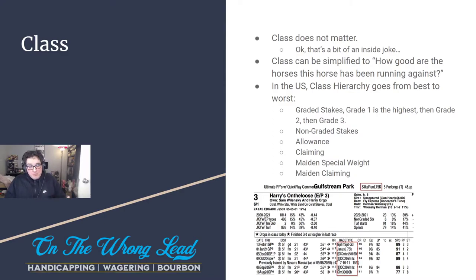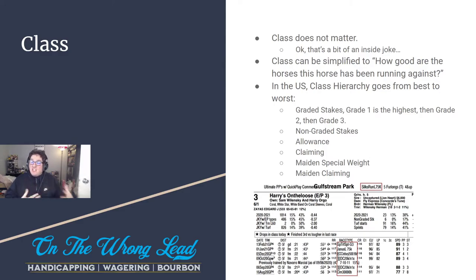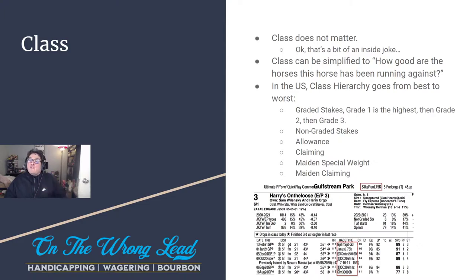Class can be simplified to: how good are the horses this horse has been running against? What kind of company has this horse been keeping? In the US there's a class hierarchy. You start with graded stakes — Grade 1s being the highest, the best races. The Kentucky Derby is a Grade 1 race, the Santa Anita Handicap is a Grade 1 race, most of the Breeders' Cup races are Grade 1 races. Then you get Grade 2s and Grade 3s, going slightly lower. Then you have non-graded stakes, listed stakes, and overnight stakes.